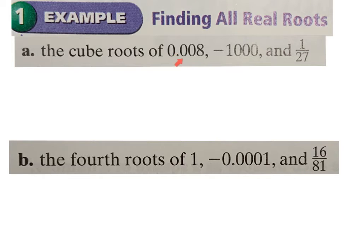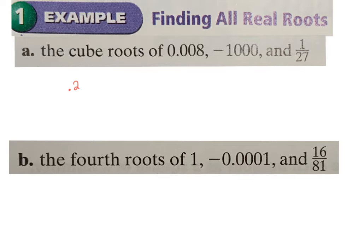The cube root of 8 is 2. Since 0.008 has three decimal places, the cube root has one decimal place: 0.2. If you have three decimals, divide by the cube (3) to get one decimal place; if you had six decimals, the cube root would have two decimals. For negative 1000, what multiplied by itself three times gives 1000? That's 10, and since we want negative 1000, the answer is negative 10. That works because the index is odd.